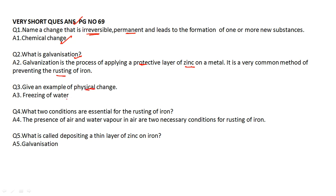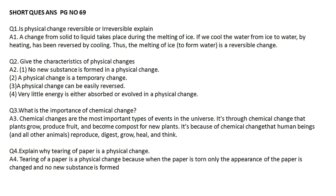Give an example of a physical change — freezing of water. You can write other examples too. What two conditions are essential for rusting of iron? Presence of air and water vapour — these are the two necessary conditions for rusting of iron. What is called depositing a thin layer of zinc on iron? That is called galvanization; it is a layer of zinc.